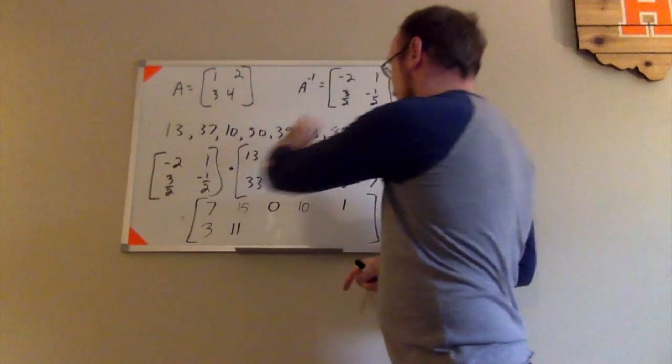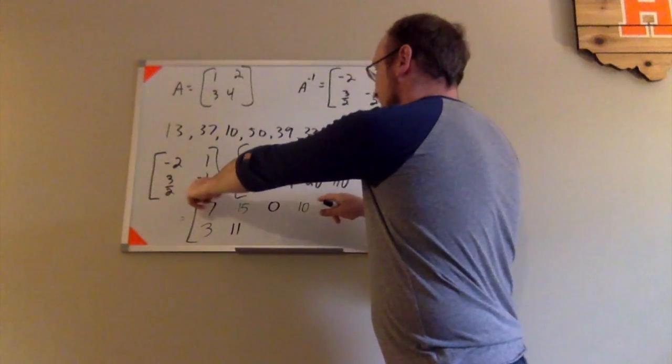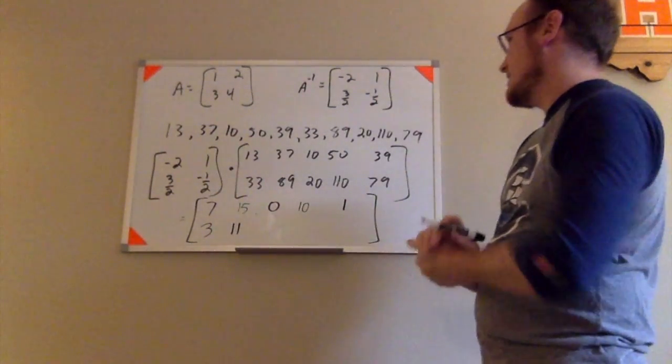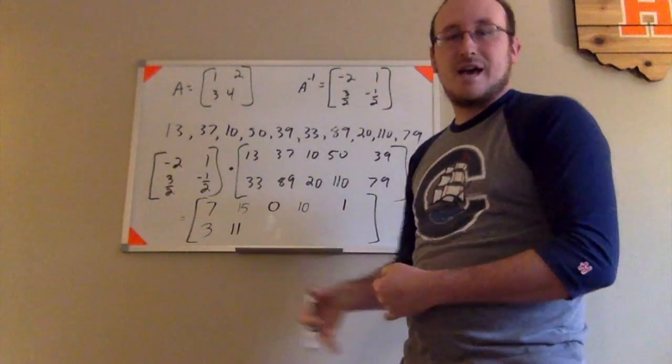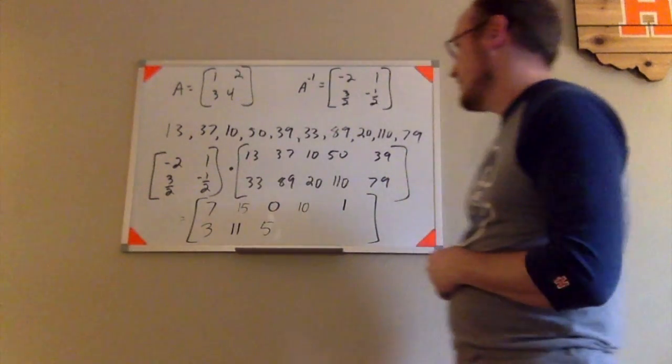And then second row, third column. 3 halves times 10 would be 30 halves. Negative 1 half times 20 would be negative 20 halves. 30 halves and negative 20 halves would be 10 halves. 10 halves or 10 over 2 would be 5 for that.